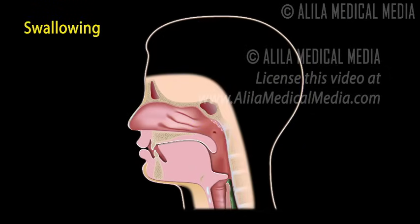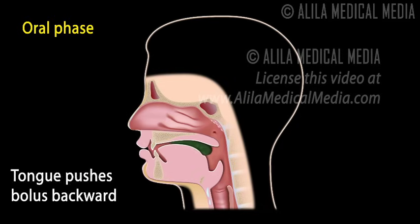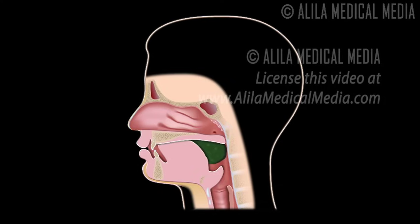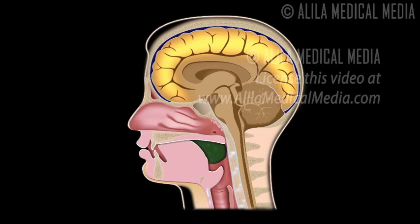Swallowing consists of three phases. The first is the oral, or buccal, phase — the voluntary part of swallowing. The food is moistened with saliva and chewed, a food bolus is formed, and the tongue pushes it to the back of the throat, the pharynx. This process is under neural control of several areas of the cerebral cortex, including the motor cortex.